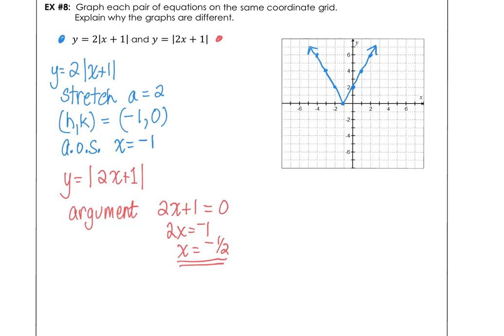It still has the stretch, but we're off by a factor of a half from the blue graph. Up 2 and over 1, up 2 and over 1, so we're just in the middle. That's how the graphs are similar yet different.